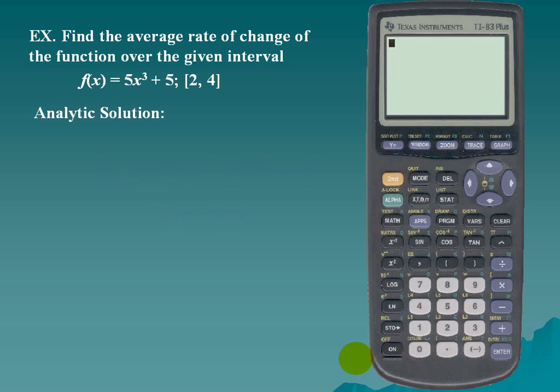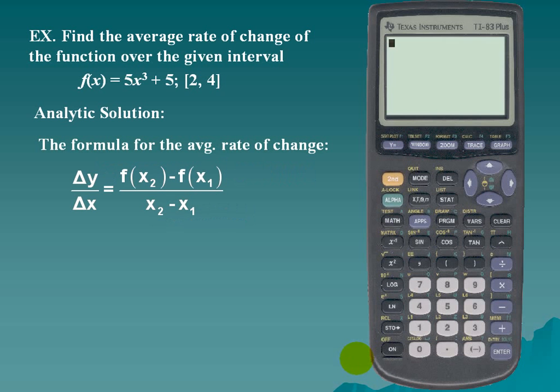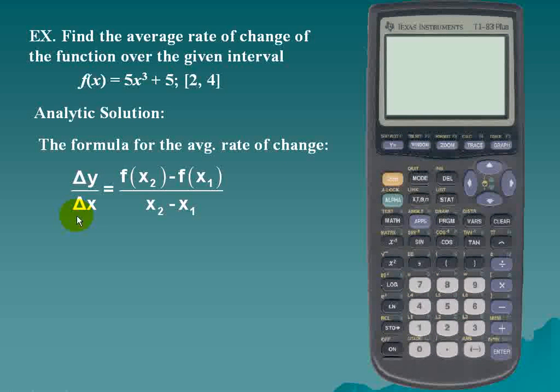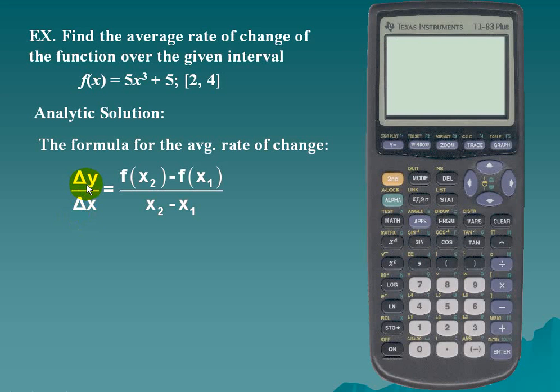Here's the analytic solution. The formula for the average rate of change is Δy divided by Δx. Delta y is the change in y and delta x is the change in x.